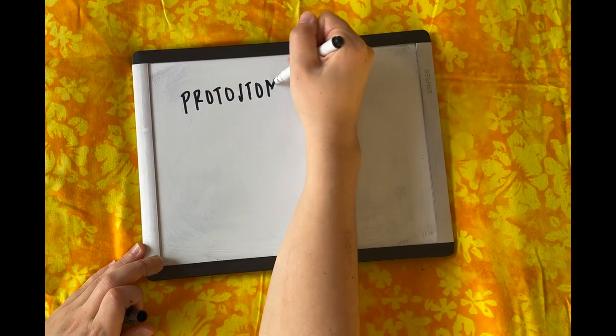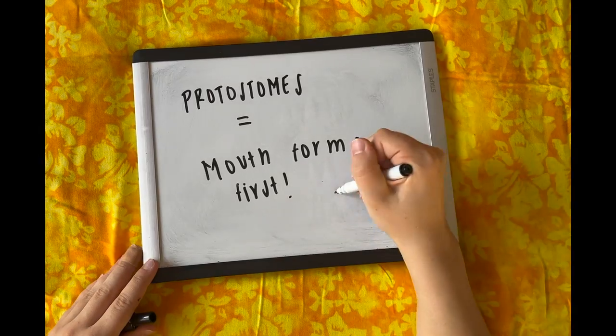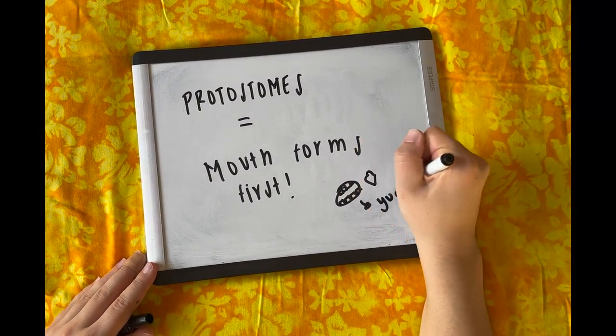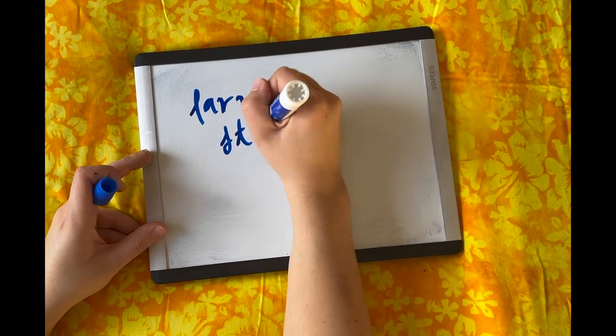Bryozoans are aquatic protostomes, meaning their mouth develops first before the anus. The Bryozoan life cycle typically comprises a larval stage, which metamorphoses into a sessile adult that proliferates by asexual budding to form colonies.